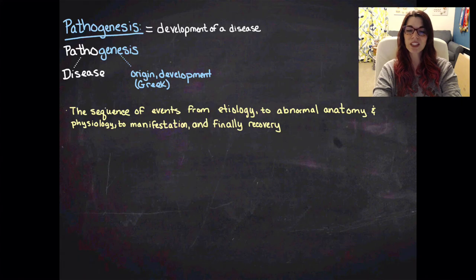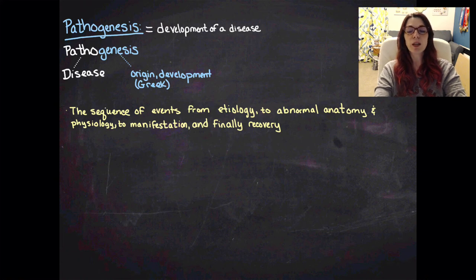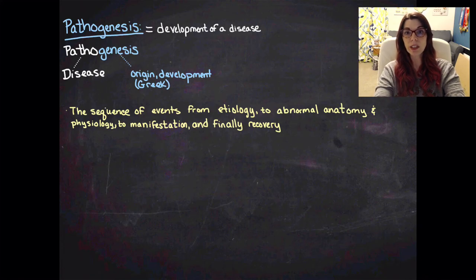And so that's a very specific definition and I just kind of want to break it down. So it's from what causes the disease to the development of changes in the anatomy or changes in the function of the body to manifestation. That's when you first actually recognize that there is an abnormality and homeostasis is actually noticeably out of balance.